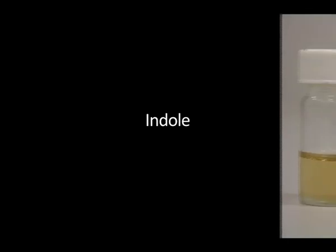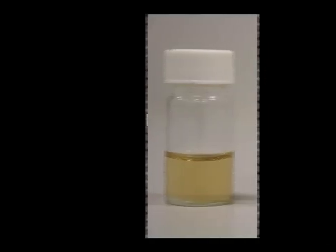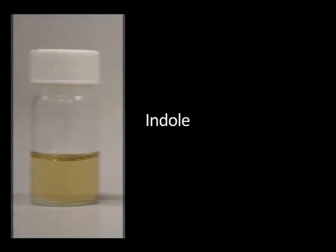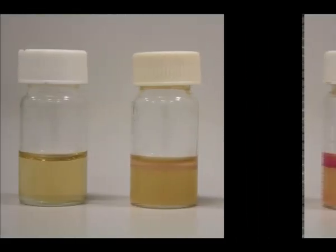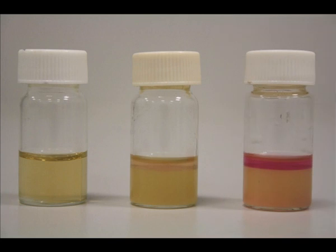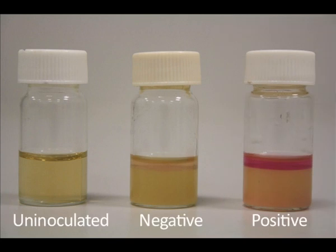The Indole test. An uninoculated Indole test appears straw coloured. A negative test appears straw coloured with a straw coloured ring at the surface. A positive Indole test can be recognised by the red ring at the surface.